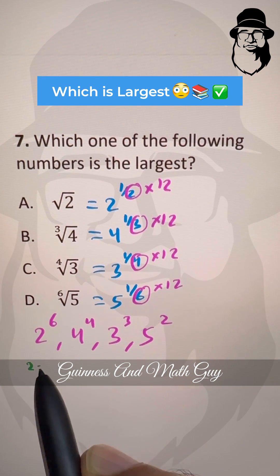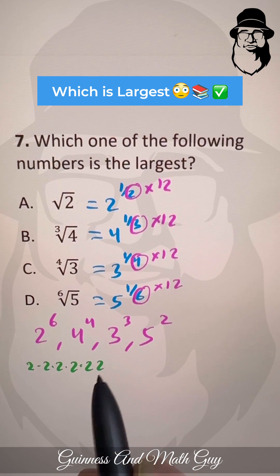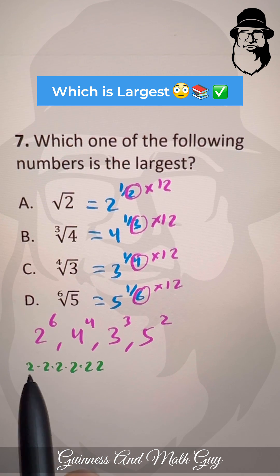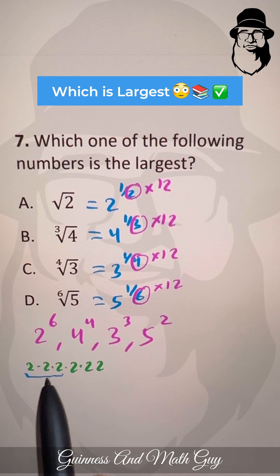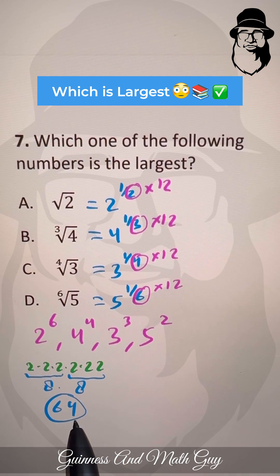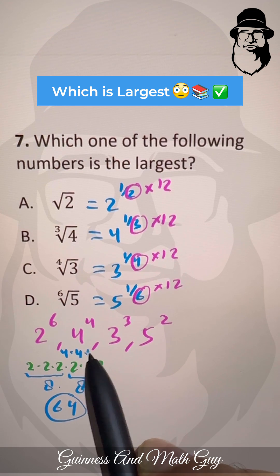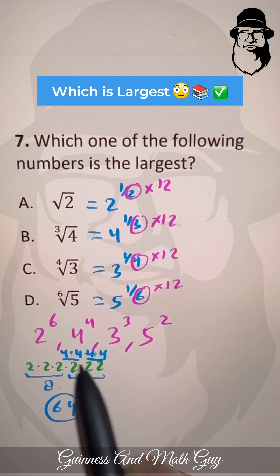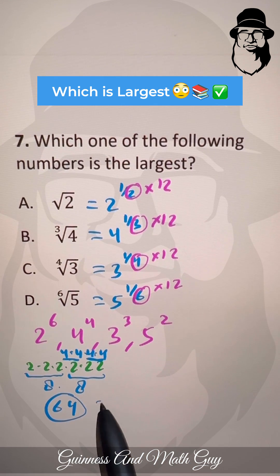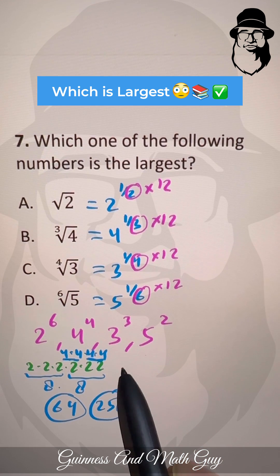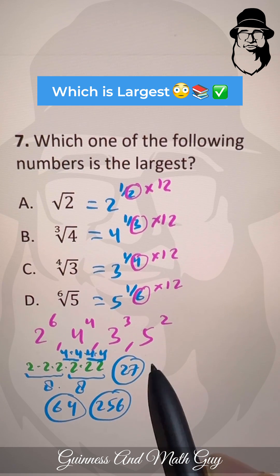Now, 2 to the power 6 means 2 multiplied by itself 6 times. 2 times 2 times 2 is 8, and 8 times 8 is 64, so 2 to the power 6 is 64. Here we have 4 times 4 times 4 times 4: 4 times 4 is 16, and 16 times 16 is 256, so 4 to the power 4 is 256. And 3 cubed is 27, since 3 times 3 is 9 and times 3 is 27. And 5 squared is 25.